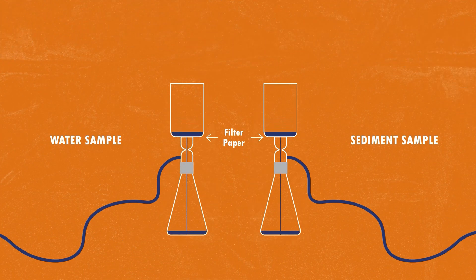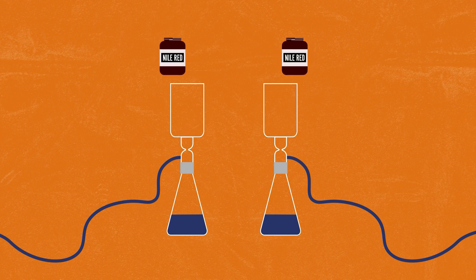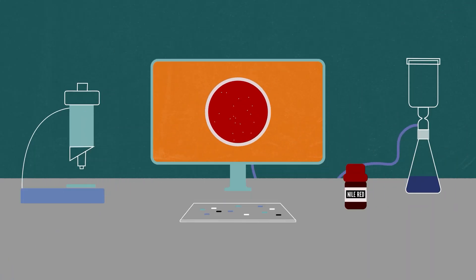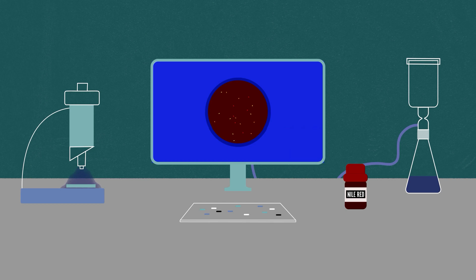Once the particles are on the filter, it is stained with a dye called Nile Red. Nile Red sticks to the surface of the particles and makes them glow yellow, orange or red when they are illuminated with a blue light. The dyed sample is photographed on a special imaging rig and the particles can then be counted and measured from the photographs.